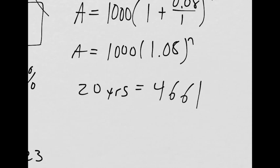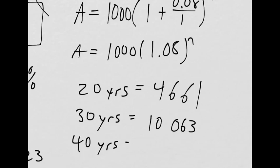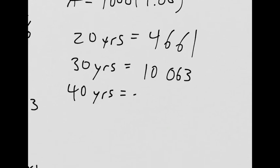Already it's kicking your GIC in the face. 30 years. $10,063. Oh my goodness. Oh man, that's not one of these. 40 years. $21,725.